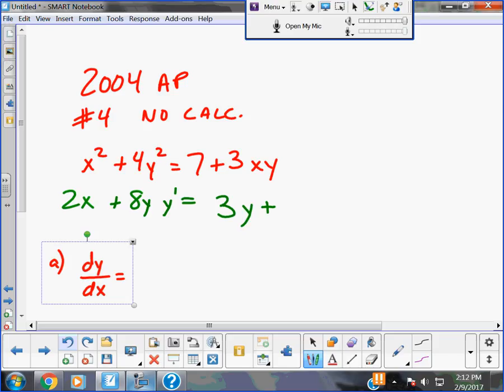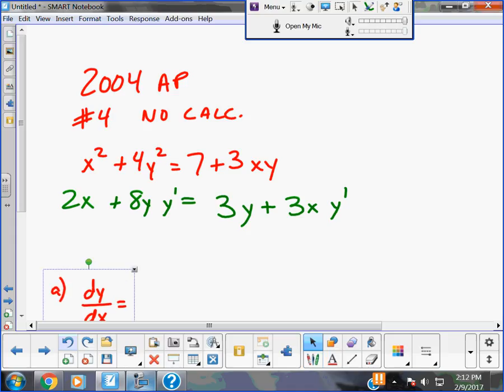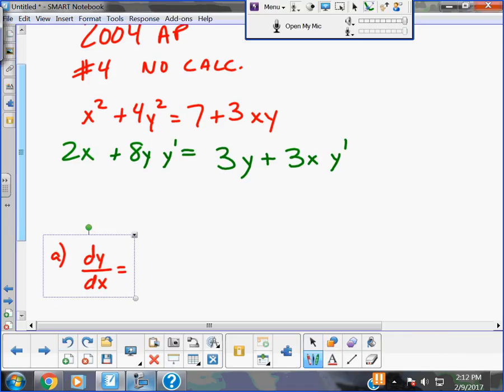On the other side, the derivative of 7 is 0, and then we have a product rule. I will treat 3x as f and I will treat y as g. I always do f first. The derivative of 3x is 3, and then the y. I don't write the dx.